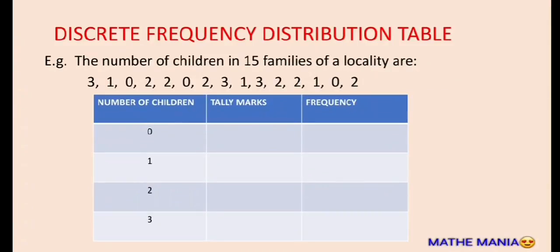We will be making three columns in this table. In the first column you will represent the quantity being observed — here it is number of children. The second and third columns will always be tally marks and frequency. First we will find out all the distinct observations in the data and arrange them in the first column in increasing order.